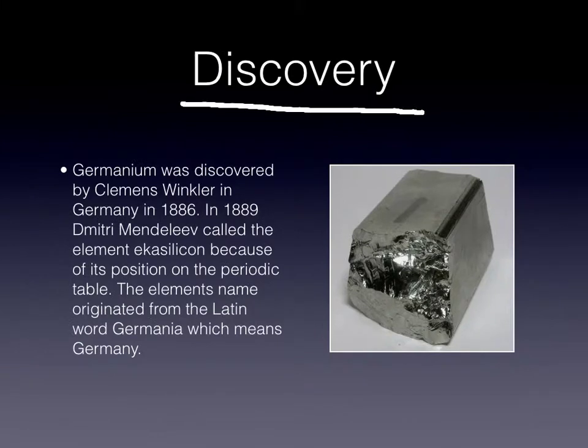Discovery. Germanium was discovered by Clemens Winkler in Germany in 1886. In 1889, Dmitry Mendeleev called the element eka-silicon because of its position on the periodic table. The element's name originated from the Latin word Germania, which means Germany.